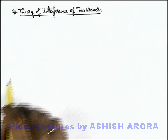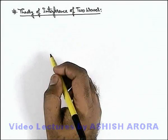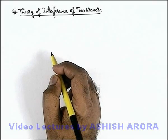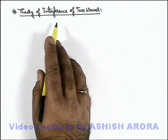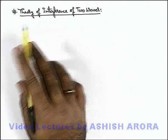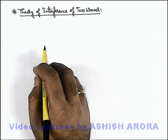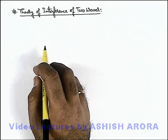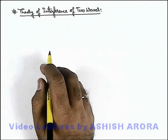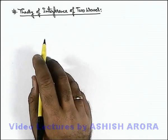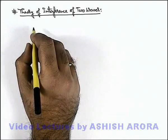Let us now study the theory of interference of 2 waves. This is the analysis I am going to execute, which I have already explained in the concept of interference of waves. Let's study it again, specifically for light intensities.